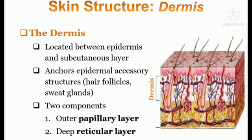That's all about the epidermis. Coming to the next layer, dermis, also called corium or the middle layer of the skin. It is located between the epidermis and the subcutaneous layer or hypodermis. This layer anchors epidermal accessory structures or derivatives called hair follicles and sweat glands, also called sudoriferous glands. It has two major components: the outer papillary layer and the deep reticular layer.